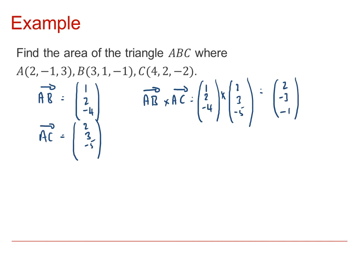Therefore the size of that AB cross AC must be by Pythagoras' theorem equal to the square root of 2 squared plus negative 3 squared plus negative 1 squared and that's equal to the square root of 14.